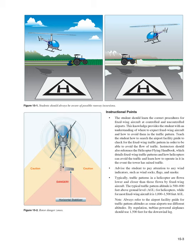Advise the student to pay attention to wind indicators such as wind socks, flags, and smoke. Typically, traffic patterns in a helicopter are flown lower and closer than those flown by fixed-wing aircraft. The typical traffic pattern altitude is 500–800 feet AGL for helicopters, while for most fixed-wing aircraft it is 1,000–1,500 feet AGL. Always refer to the Airport Facility Guide for traffic pattern altitudes, as some airports use different altitudes. By regulation, turbine-powered airplanes should use 1,500 feet for the downwind leg.